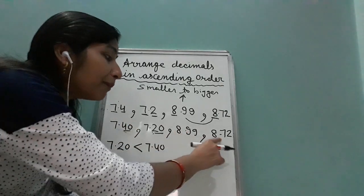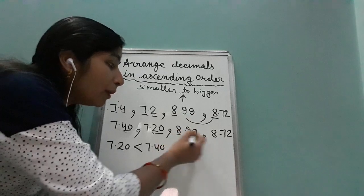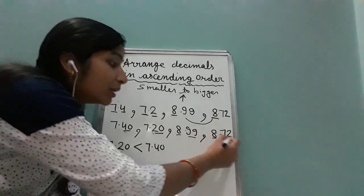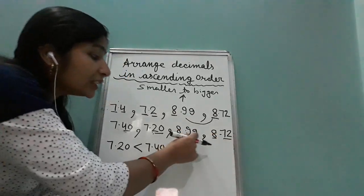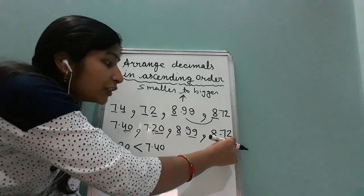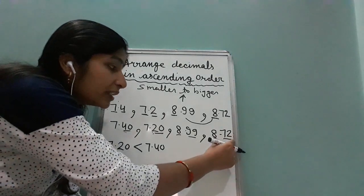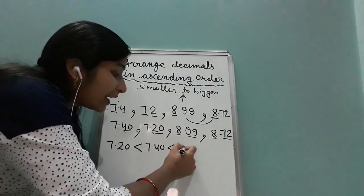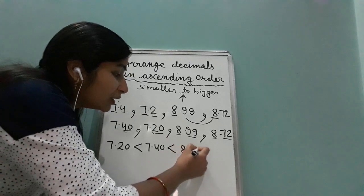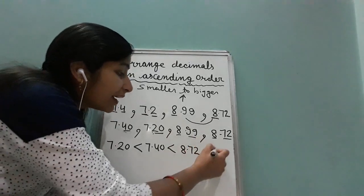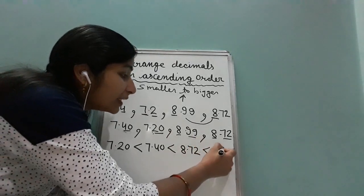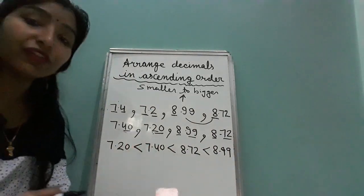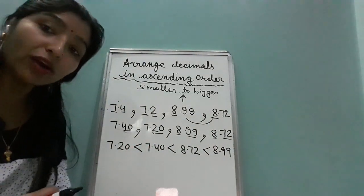Now comparing the 8s: whole part is same, decimal parts are 99 and 72 — so 8.72 is smaller than 8.99. So the ascending order is: 7.20 < 7.40 < 8.72 < 8.99. In this way we arrange in ascending order.